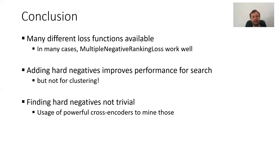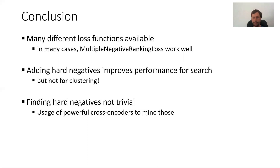In conclusion for basic training: there are many different loss functions available, and which is suitable depends on your task and the type of labeled data you have. In many cases, multiple negative ranking loss works well — you just need positive pairs with an anchor and a positive text you want close in the vector space. Adding hard negatives improves performance for search by quite a lot, but degrades performance for clustering, so there is no single gold solution. For search, hard negatives are great; for clustering, they are harmful. Finding hard negatives is not trivial — people often use a multi-step approach with a powerful cross-encoder for denoising, repeated over multiple iterations.